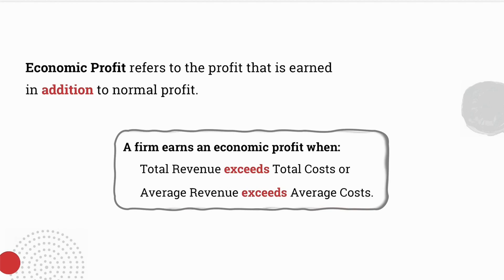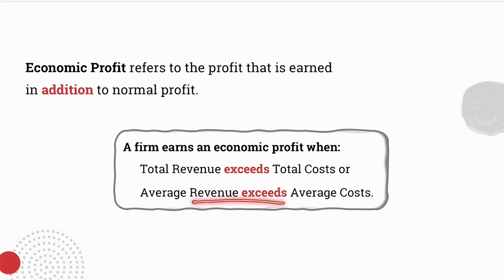The main difference between normal profit and economic profit is that with normal profit, our total revenue is equal to total costs and our average revenue is equal to average costs; but with economic profit, our total revenue will exceed our total costs and our average revenue will exceed our average costs.